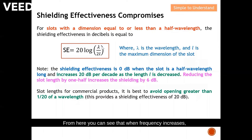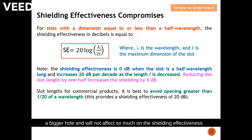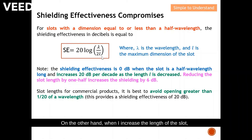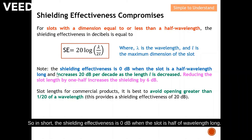From here you can see that when frequency increases, the wavelength actually reduces, which means you can open a bigger hole without affecting the shielding effectiveness as much. On the other hand, when you increase the length of the slot, the overall shielding effectiveness reduces. In short, the shielding effectiveness is 0 dB when the slot is half a wavelength long.